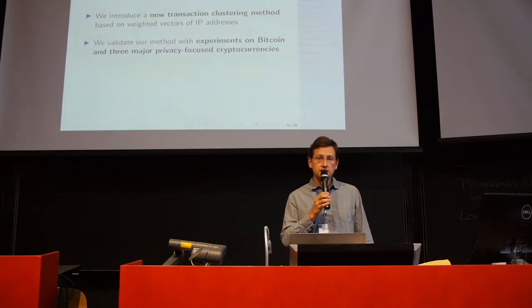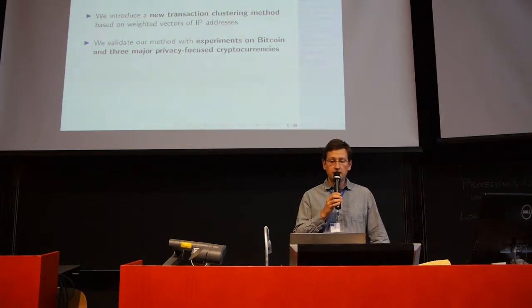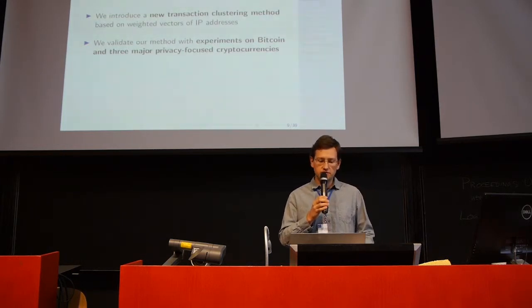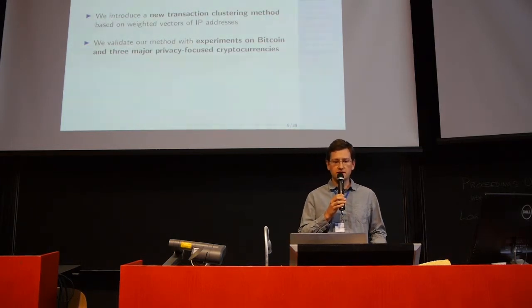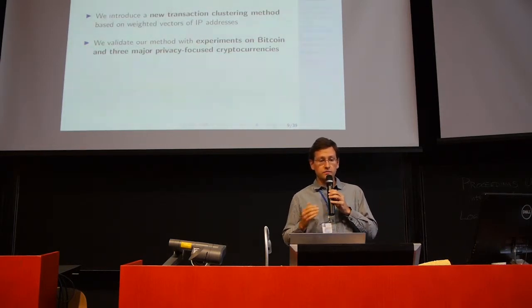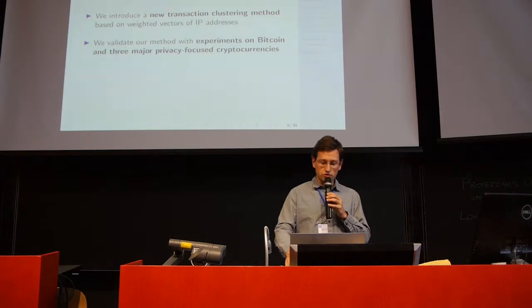Our two contributions in this work are as follows. First, we introduced a new transaction clustering method based on IP addresses, and weighting the IP addresses that first propagate a certain transaction. And I will explain in more detail how we do that. And then we validated our method experimentally, doing experiments not only on Bitcoin, both on Testnet and Mainnet, but also on the three alternative cryptocurrencies that I mentioned earlier. And as far as we are aware, we are the first to apply these techniques not only to Bitcoin, but also to other cryptocurrencies.